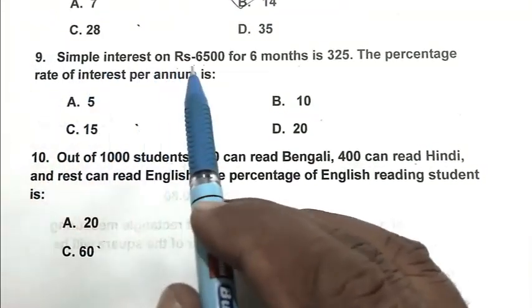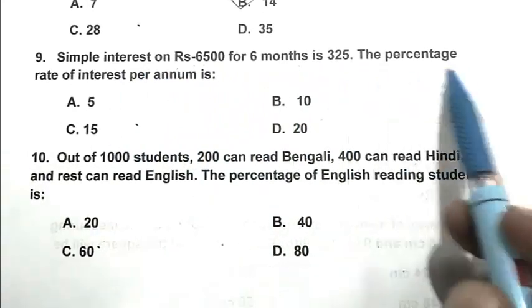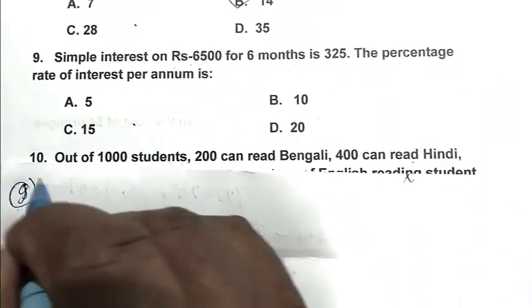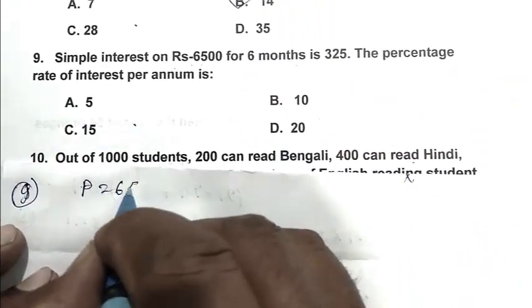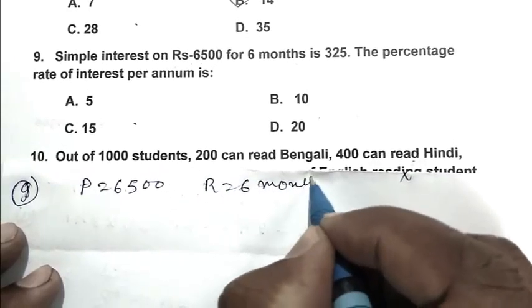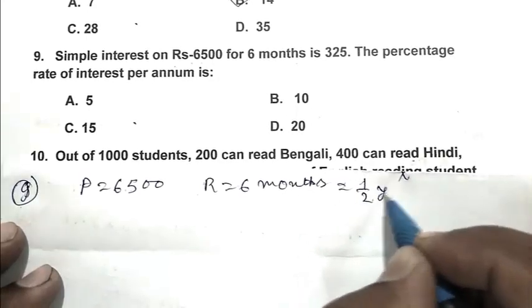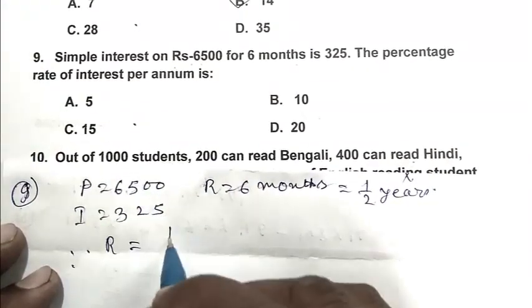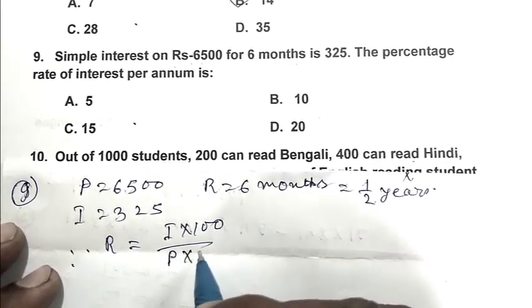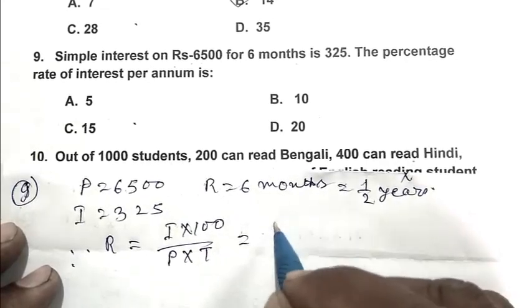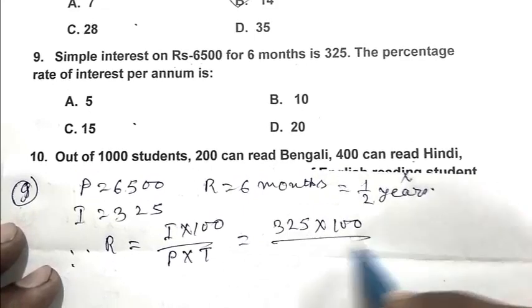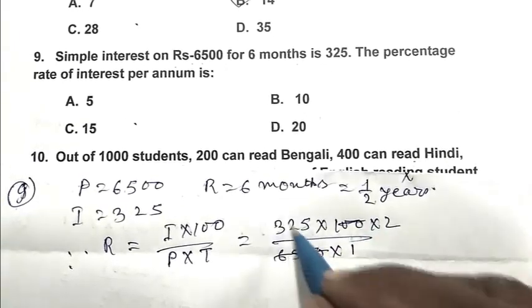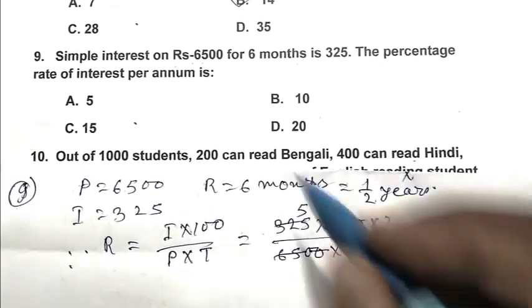Question number 9: Simple interest on Rs. 6500 for 6 months is 325. The percentage rate of interest per annum is. We can calculate it from formula. Principal 6500, time 6 months or 1 by 2 year, interest 325. So rate of interest per annum is interest times 100 divided by principal multiplied by time. That is 325 multiplied by 100 divided by 6500 multiplied by half. That is 10%. So B is the right answer.